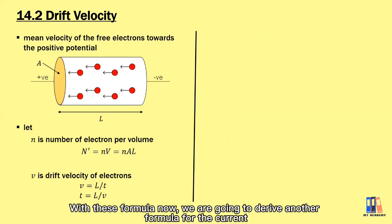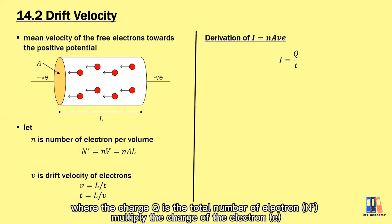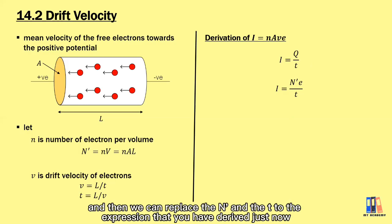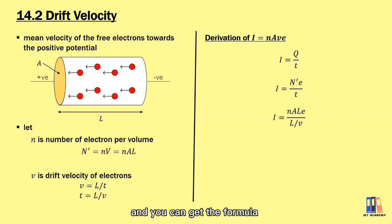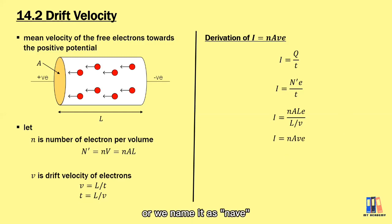With these formulas, we can derive the expression for current. Starting from I equal to q over t, where charge q is the total number of electrons multiplied by the electron charge e, we substitute the expressions for total electron count and time. This gives I equal to nALe divided by L over v. Simplifying, we get the formula I equal to nAvE, also written as nAv.